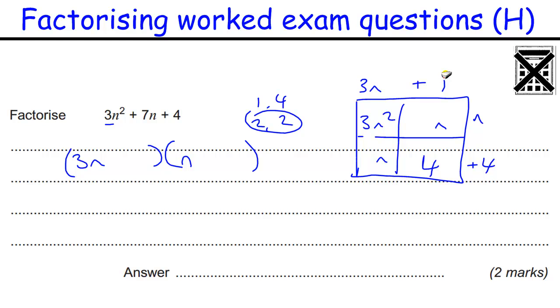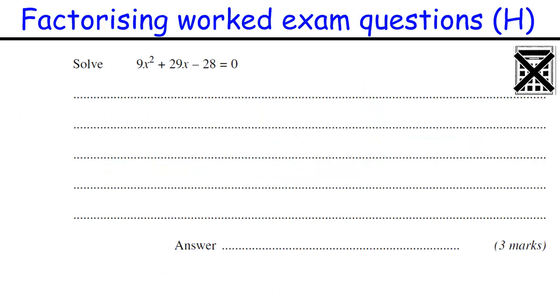So maybe I should try it the other way around. The 4 and the 1. So I have the 4 there and the 1 there. Now this time 4 times n is 4n. 3n times 1 is 3n. And 4n plus 3n is the 7n. So that tells me the 4 must go with the 3n. And the 1 must go with the n. So it is important which way around those two are.